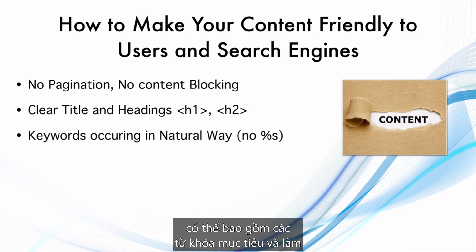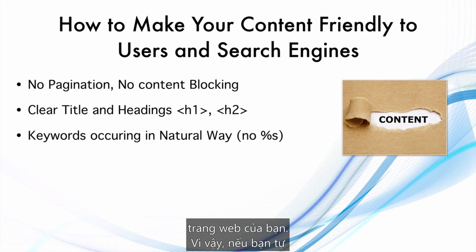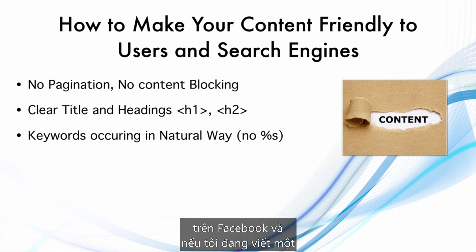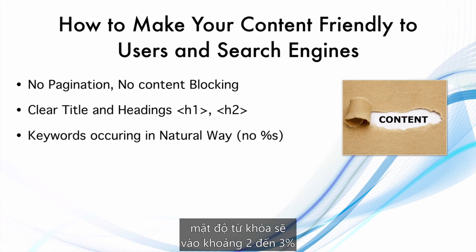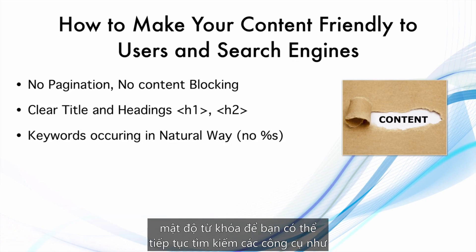You can include your target keywords and make them occur in a natural way. There is no set percentage of how often target keywords should appear. If you are naturally writing an article — for example, a 2,000-word article about Facebook Ads — the keyword density will naturally be around 2 to 3 percent. There are tools where you can check keyword density; search for such tools on the web.